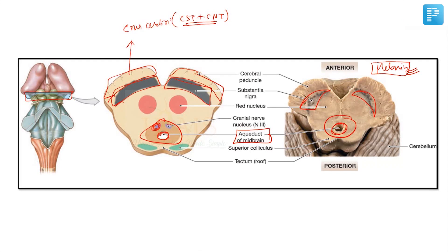In the periaqueductal gray you will see the third nerve nucleus, maybe fourth nerve nucleus, because cranial nerves three and four have nuclei in the midbrain. If you see the third nerve nucleus, then the section must have been taken at the level of superior colliculus. If you have seen the trochlear nerve nucleus, then you must have taken the section at the inferior colliculus level.